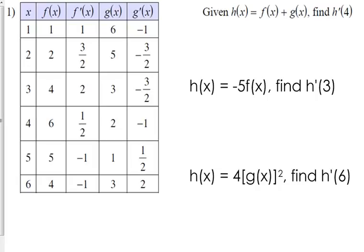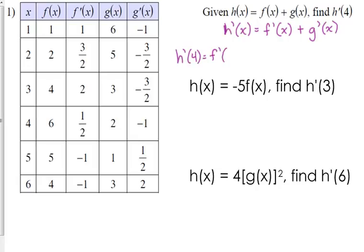So let's say here's a new function h of x, and the first example is that h of x is equal to f of x plus g of x, and they want us to find h prime of 4. All we need to do is express what the derivative of h is. If h is the result of a sum, then it's just the sum of their derivatives. So h prime of 4 is equal to f prime of 4 plus g prime of 4. f prime of 4 is 1 half, g prime of 4 is negative 1, so 1 half plus negative 1 is negative 1 half.